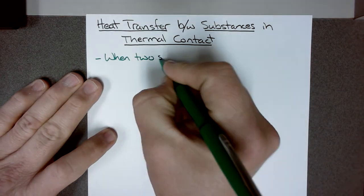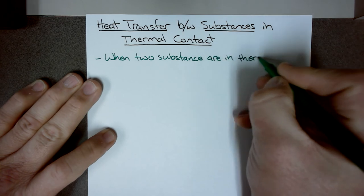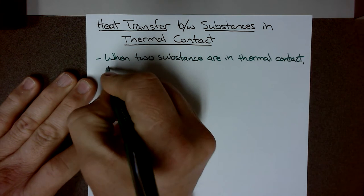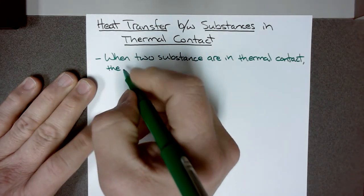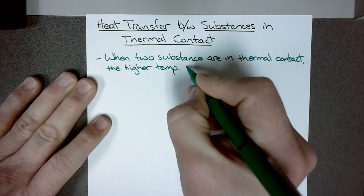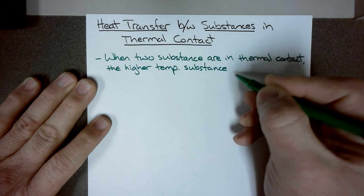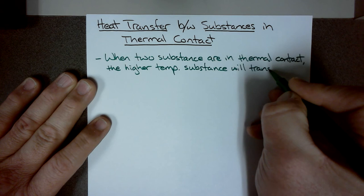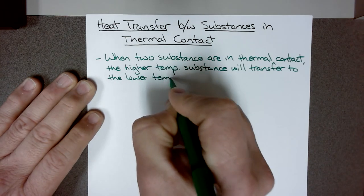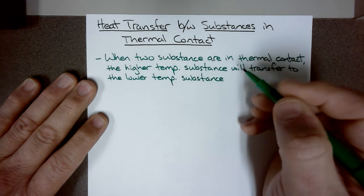When two substances are in thermal contact — in other words, one substance has a higher temperature than the other — the higher temperature substance will transfer heat to the lower temperature substance until both substances reach the same temperature.